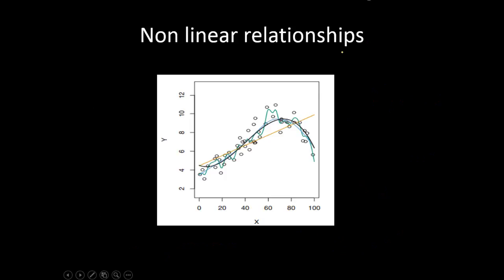Linear models have their own demerits as well — they are not able to give good predictions because most relationships in the real world are actually non-linear. You will rarely find a straight-line relationship between different variables. As you can see, the straight-line fit — the yellow one — is not a good fit to this distribution of data, whereas the non-linear one fits the data much better. So when the primary objective is prediction, non-linear or non-parametric models do a much better job and we do not really care whether interpretation is easy or difficult.